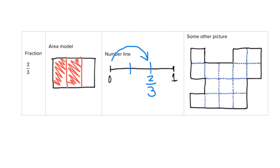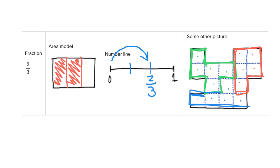Since there are fifteen squares divided into three pieces, each piece is going to be five squares. I mark out five squares for one piece, another five squares for a second piece, and the final five squares for the third piece. To show two-thirds, I shade in two of those groups — the green one and the blue one.